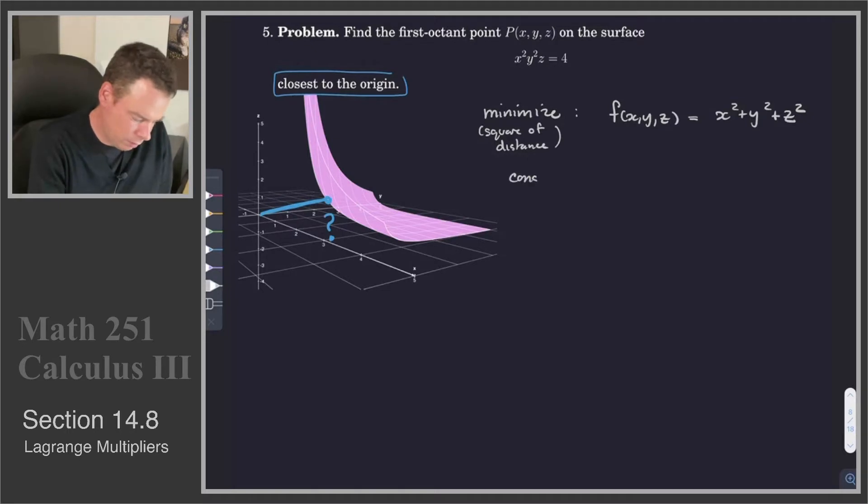What's our constraint? Well, where do these points x, y, z have to live? Well, they got to live on the surface. The points that we're interested in are the ones that live on the surface that are closest to the origin. And so our constraint is the equation of the surface. And so that's going to be our function g of x, y, z.